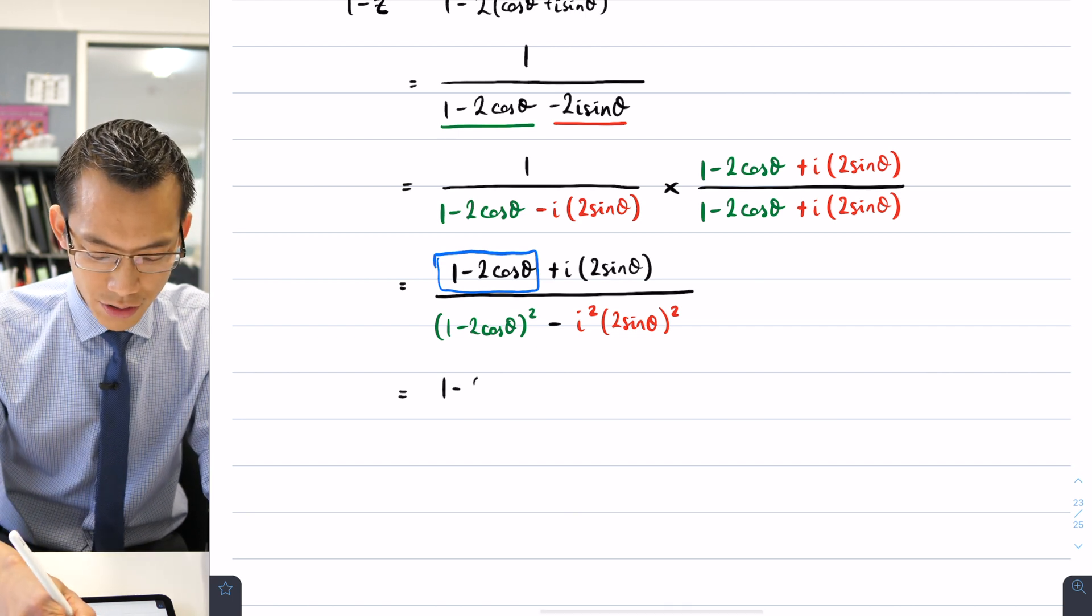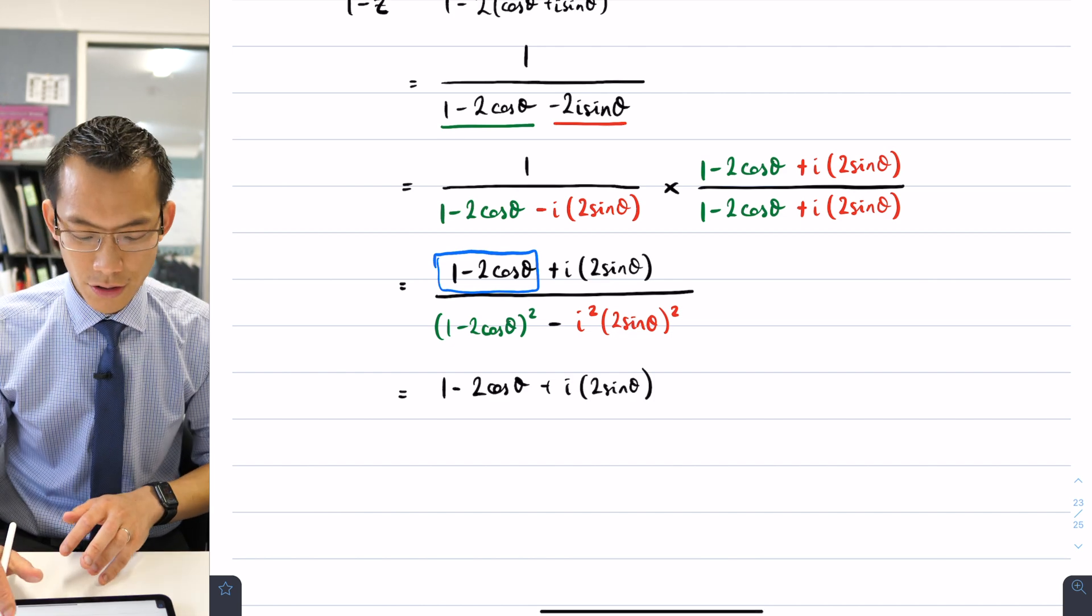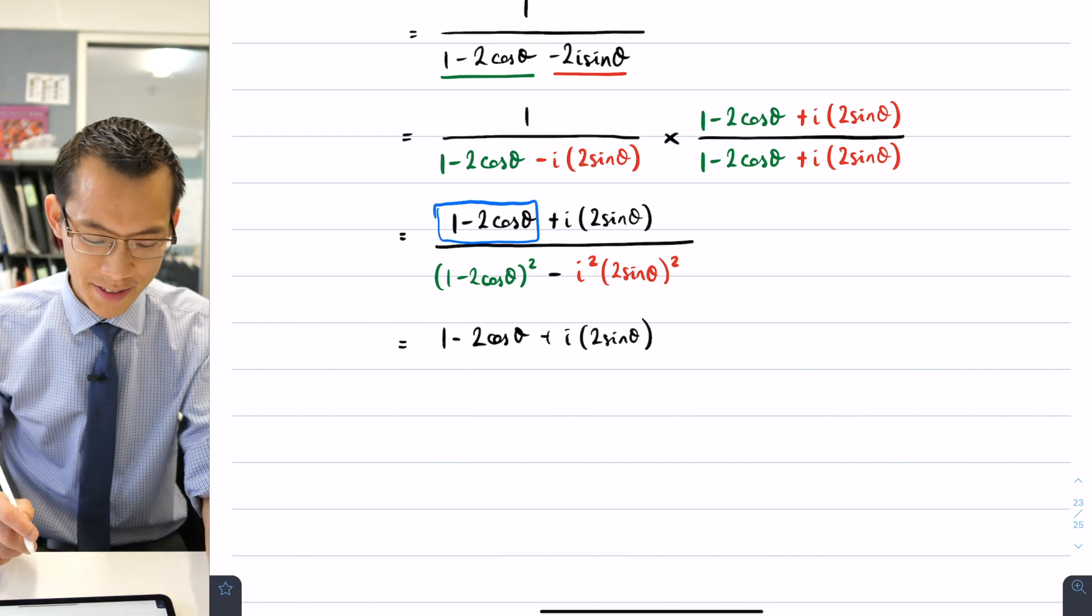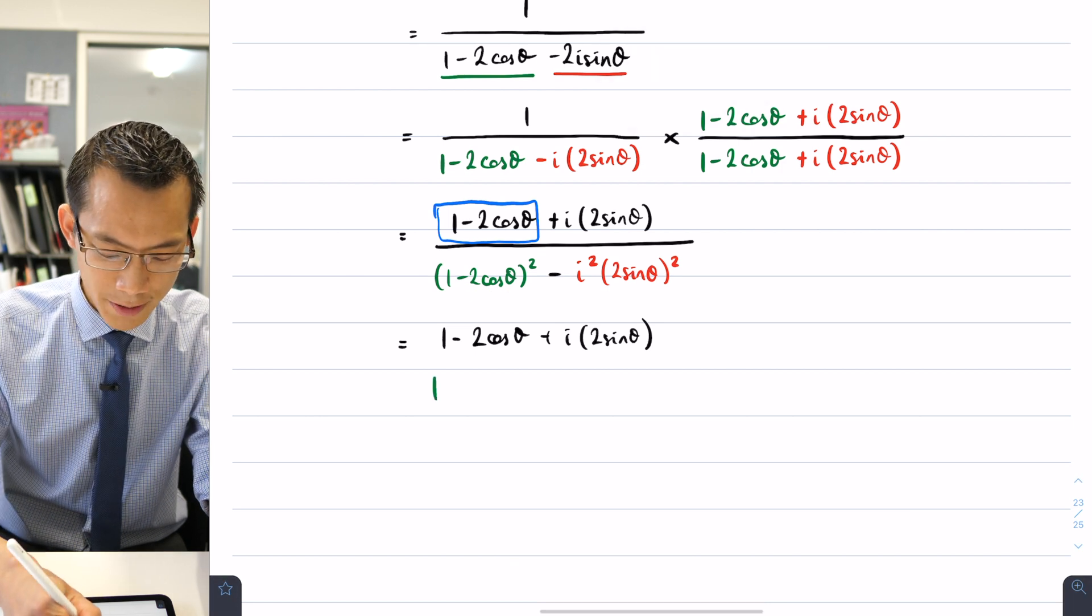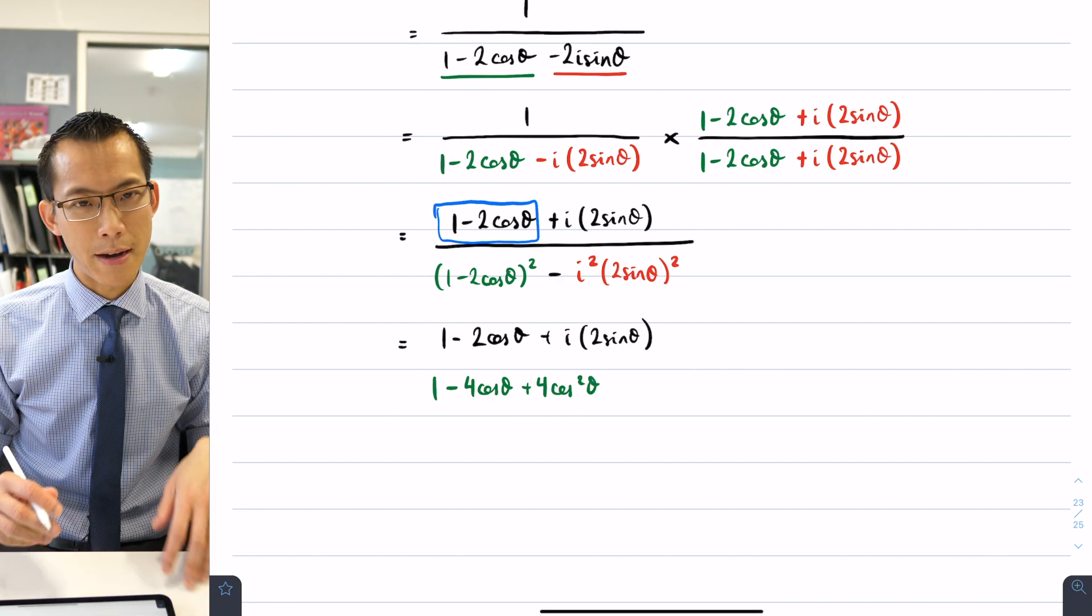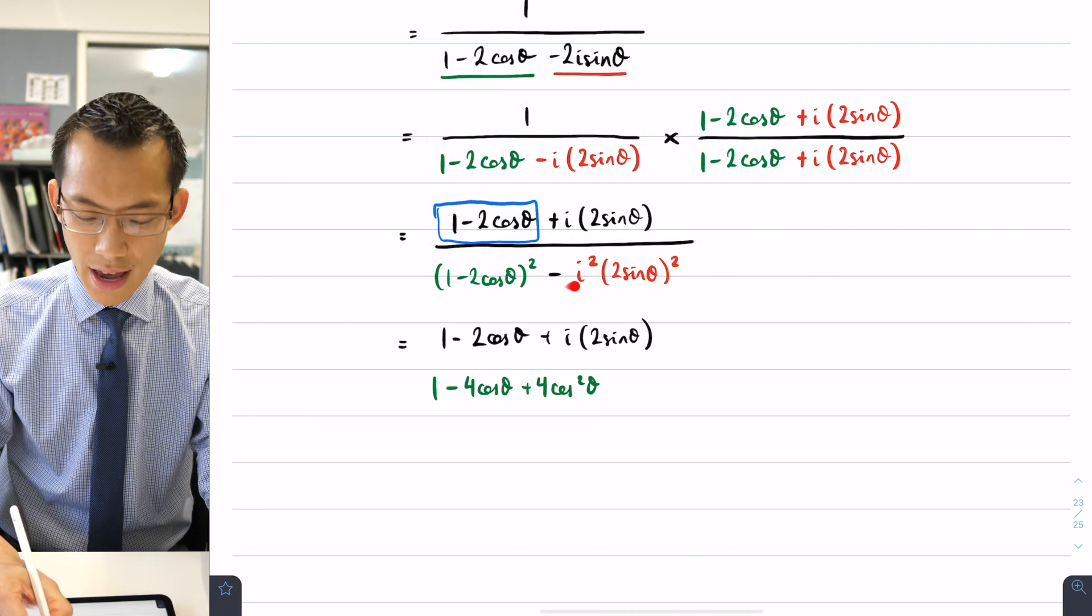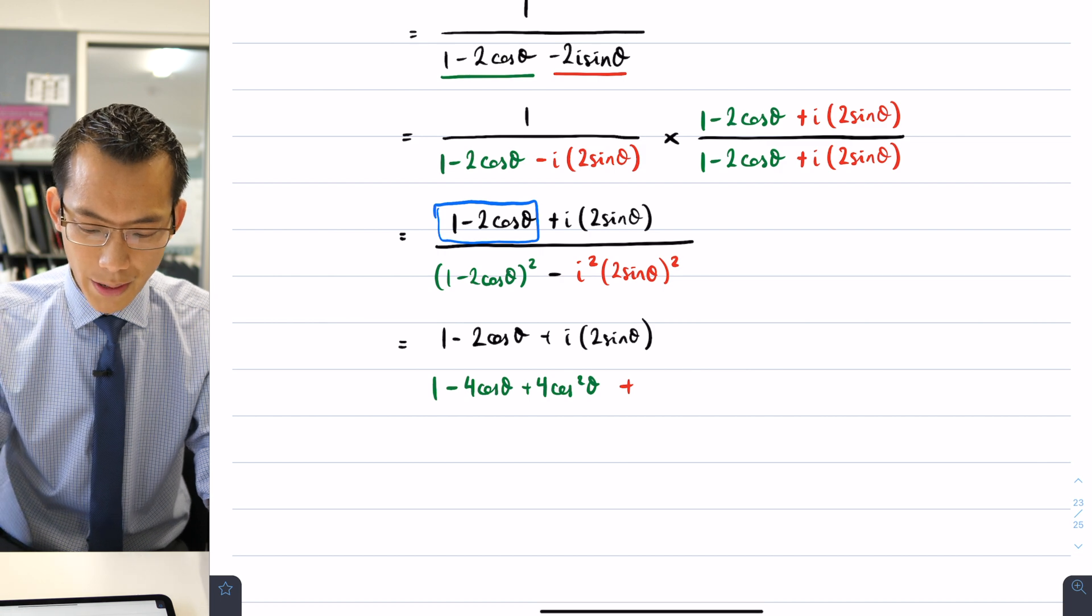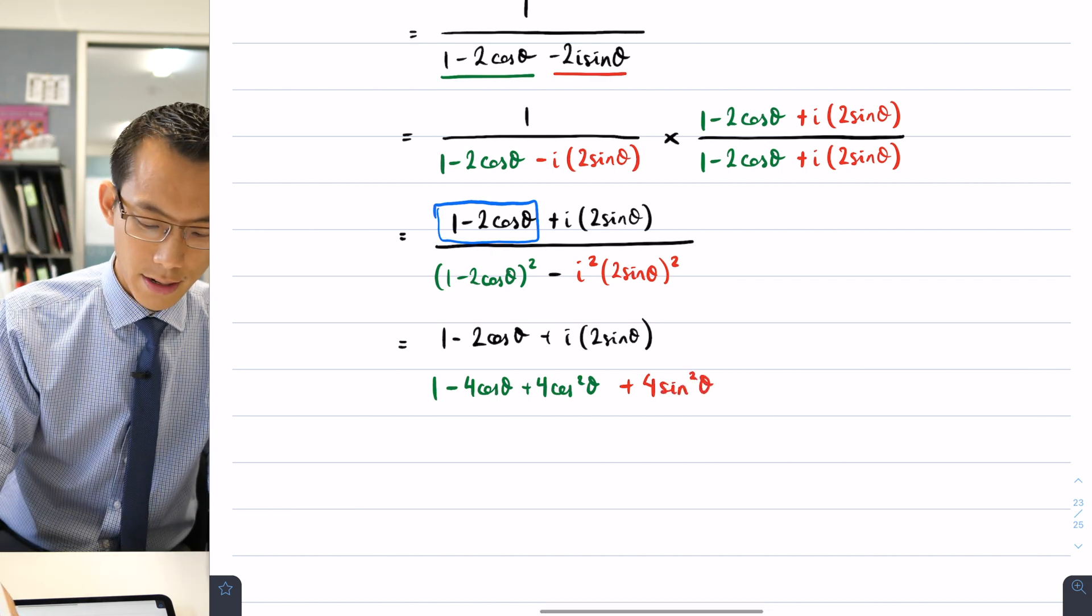My (1 - 2cos θ) + i(2sin θ) is just going to hang out there on the numerator. What do I get on the denominator? This (1 - 2cos θ)² is going to give me 1 - 4cos θ + 4cos² θ—that's my a² + 2ab + b²—and then when I have a look at this section here, I've got minus and then I've got an i², so this double negative is going to become plus plus. Then I get 4sin² θ, and now I can complete my fraction.